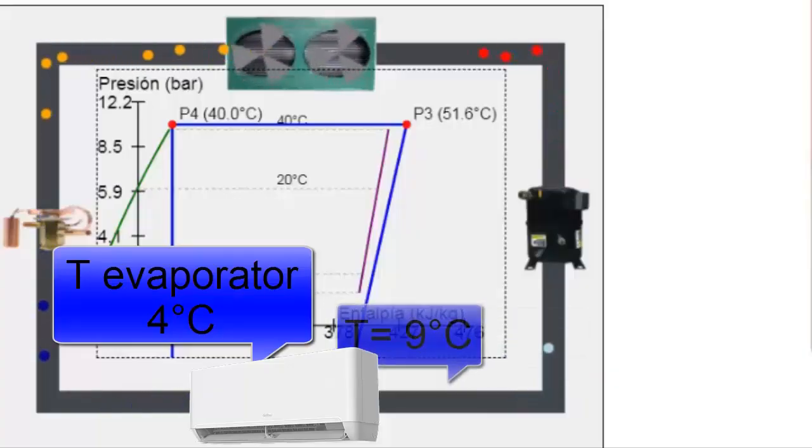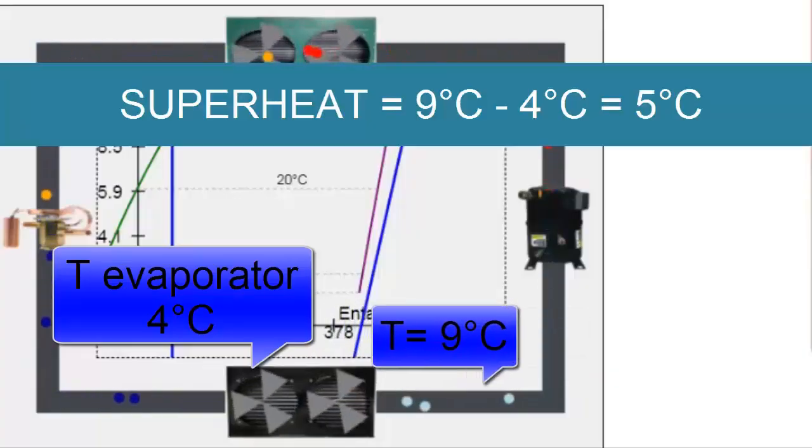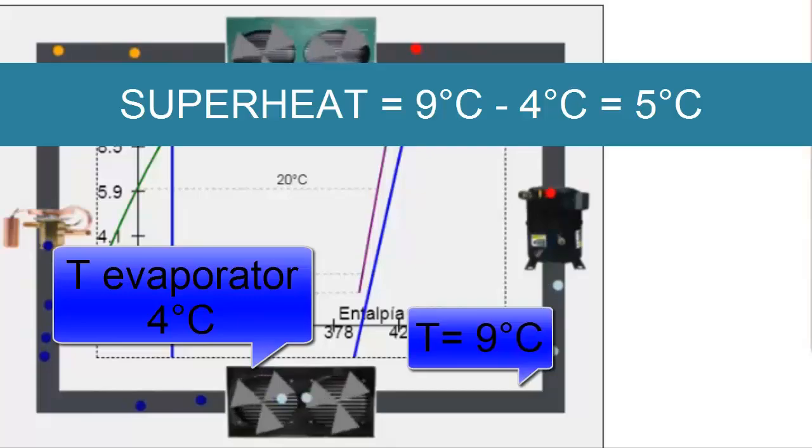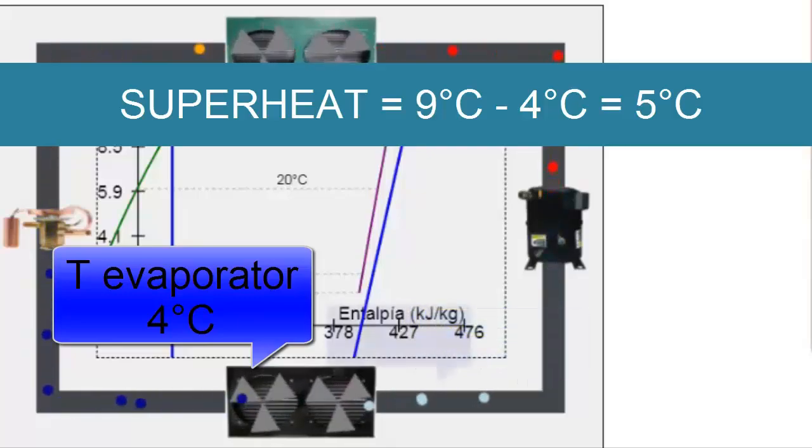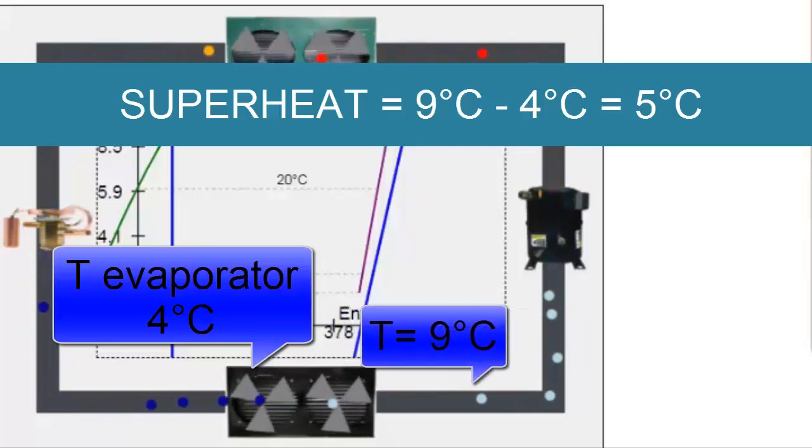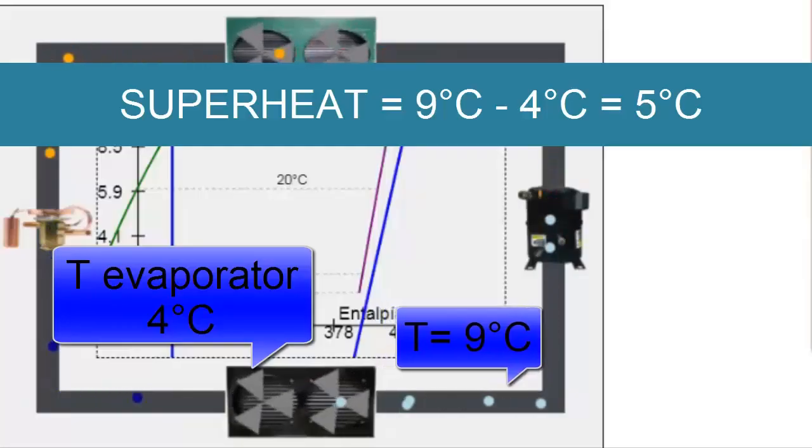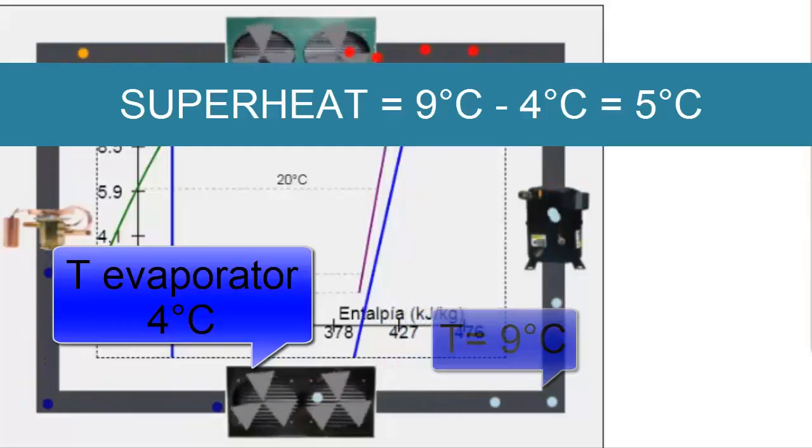The superheat value varies depending on the thermal load of the air conditioning system. For example, in a room or space with a large number of people, the superheat may exceed 5 degrees Celsius.